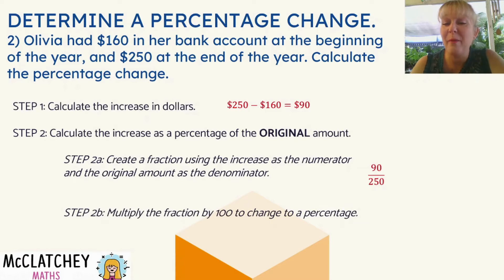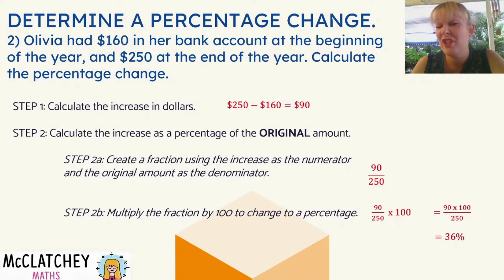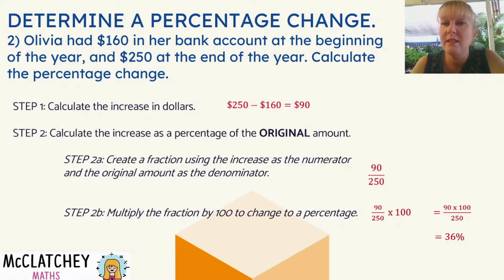We're now going to multiply that by 100 to make it into a percentage. We're going to simplify that a little bit further on paper — there's some cancelling to simplify even further. There are four 25s in 100, therefore four times nine gives 36%. Also, once again, much easier to do on your calculator: 90 divided by 160 times 100 gives you 36. Add your percentage symbol afterwards.